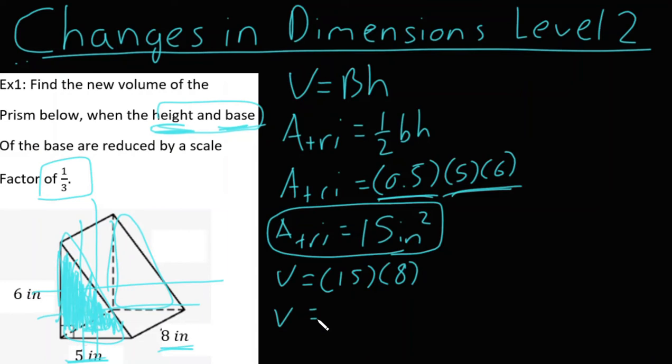And so of course we can do 15 times eight. Let's see, off the top of my head I guess that'd be 120, but let's do 15 times eight just to be sure, and yes, 15 times eight is 120 inches cubed. Now what does this mean for our problem? It means that our original volume is going to be 120 inches cubed, but what we're trying to find is the new volume.